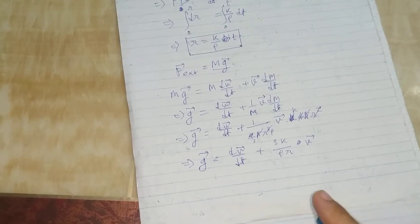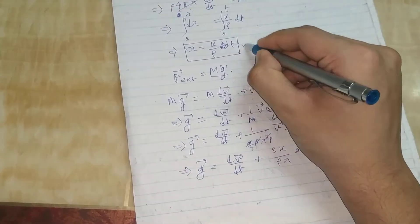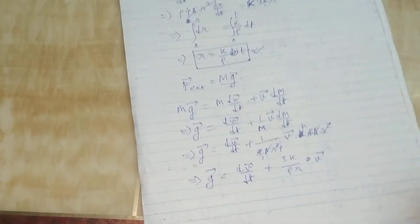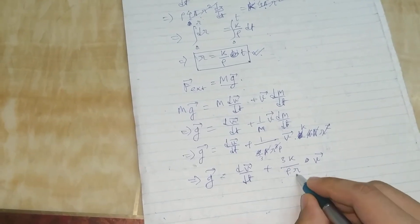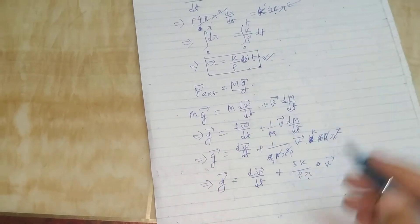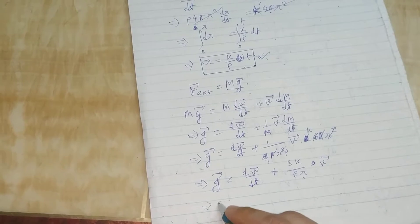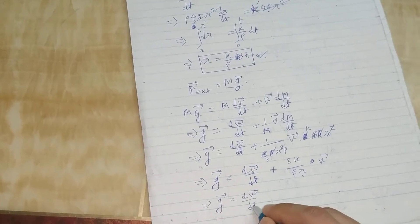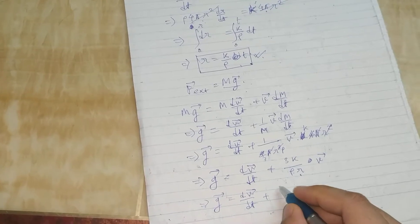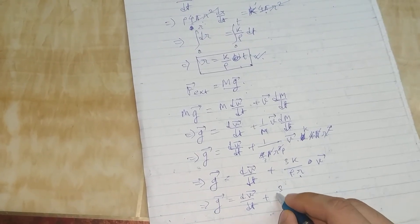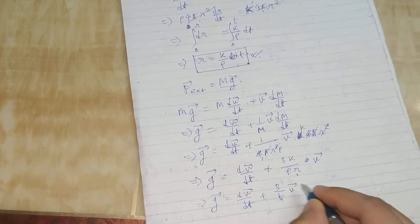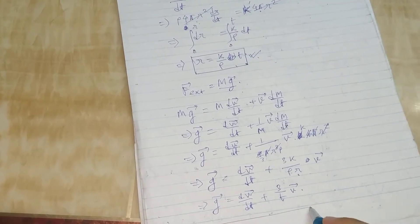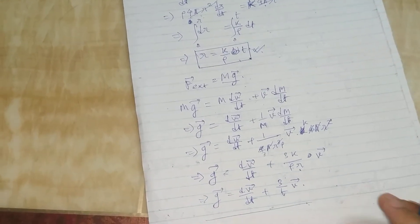Now here, this relation R = Kt will come in handy. We will replace this R with Kt and we will get the simplified equation. Now this is the equation we will solve.